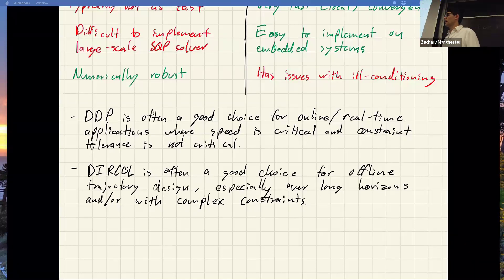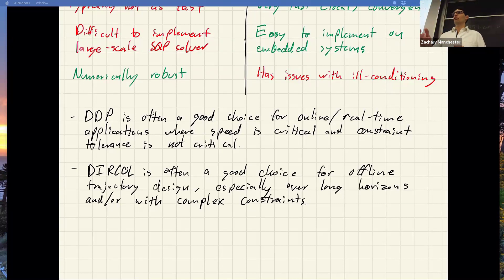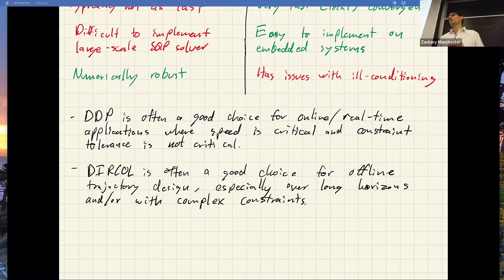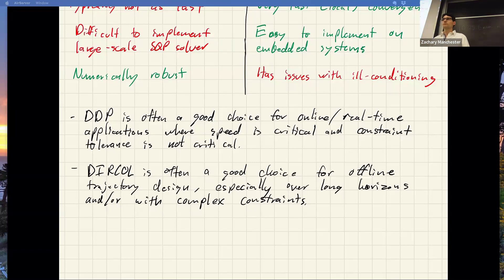If you're going to do DIRCOL online, a typical approach is rather than solve the nonlinear problem to convergence, you do SQP and just do one QP iteration per MPC time step — you don't fully converge, you keep updating and warm-starting. That leverages the nice warm-starting properties where you can have infeasible guesses. There are lots of tricks to get speed in an online setting.